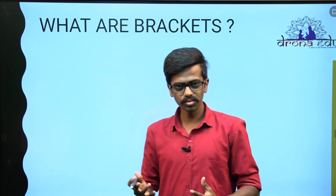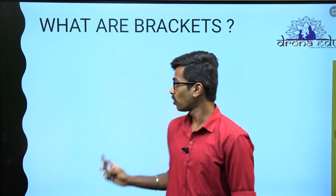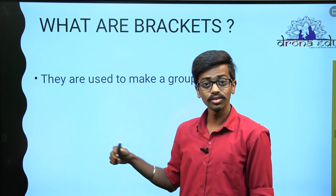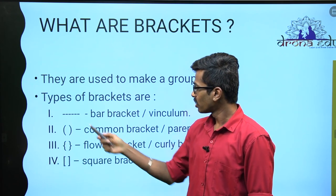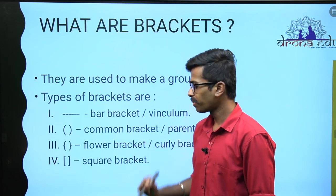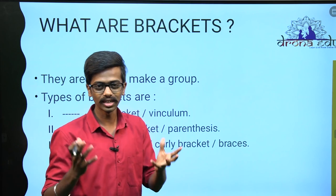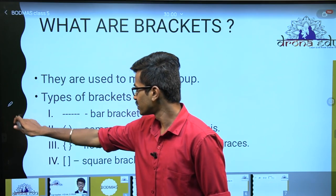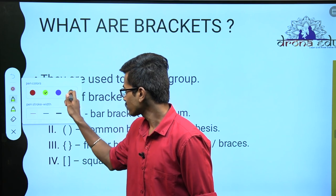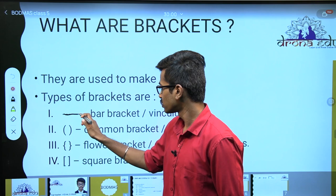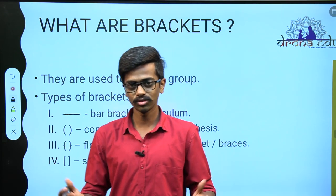What are brackets? Brackets means grouping something together. Whenever you group something together, you put them inside the brackets. The different kinds of brackets are: first, the bar bracket, also called the vinculum. Just remember it as bar bracket — just a straight line on top of the numbers. To group them, use the bar bracket.